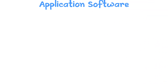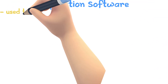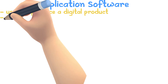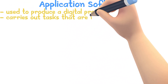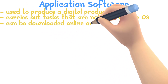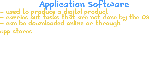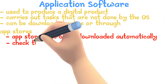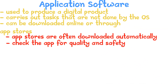An application software is an application that is used to produce a digital product, like an image or text document. This might even include other tasks that are not carried out by the operating system. These apps can be downloaded online or through app stores. App stores often come downloaded automatically and check the app for quality and safety before presenting it to the user. Some types of application software shall be discussed in the next part of the video.